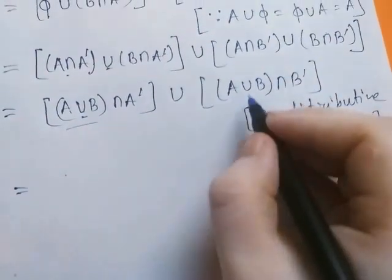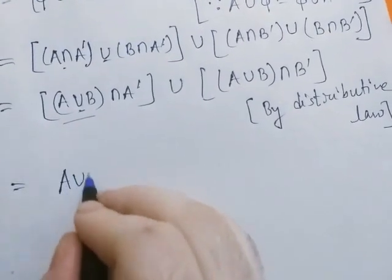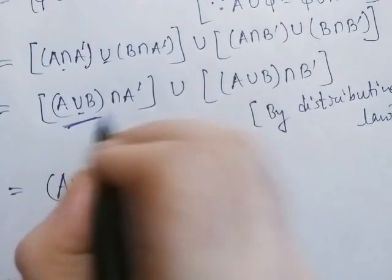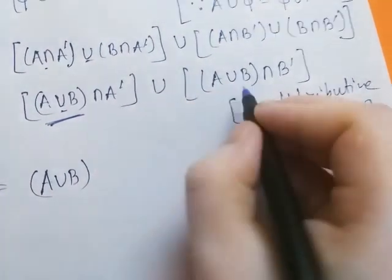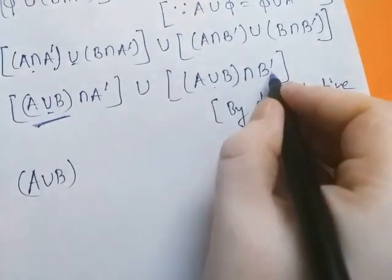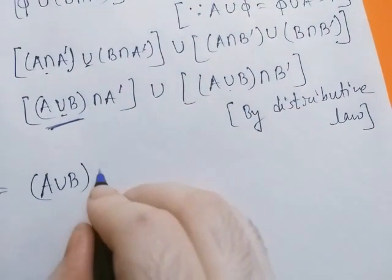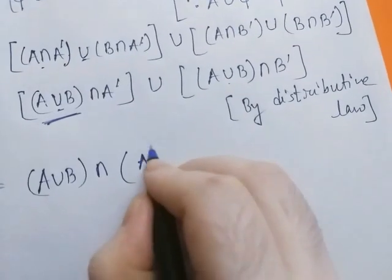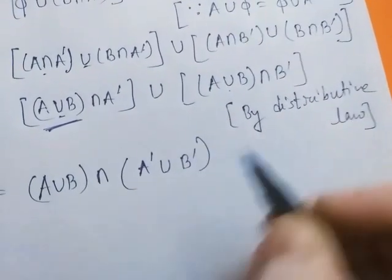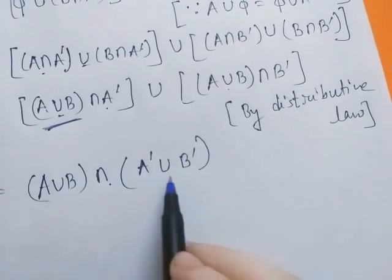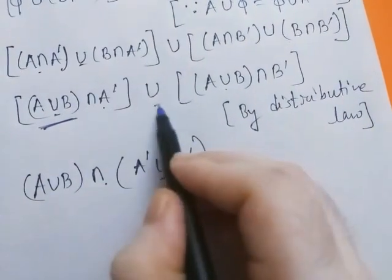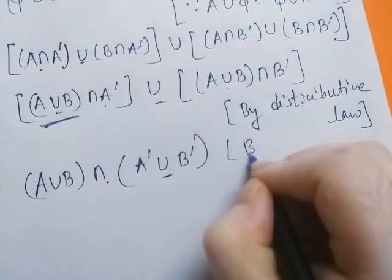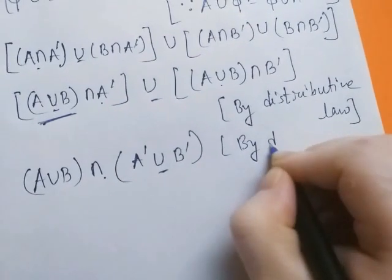Again applying the distributive law — if we suppose A is (A ∪ B), B is A', and C is B', then (A ∪ B) ∩ A' ∪ (A ∪ B) ∩ B' equals (A ∪ B) ∩ (A' ∪ B') by the distributive law.